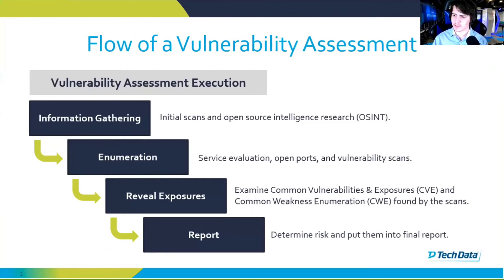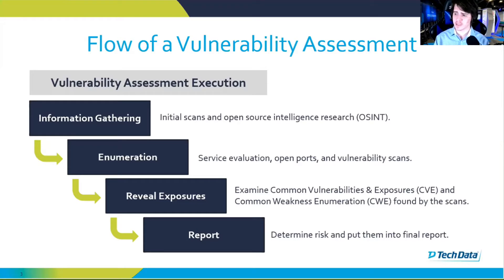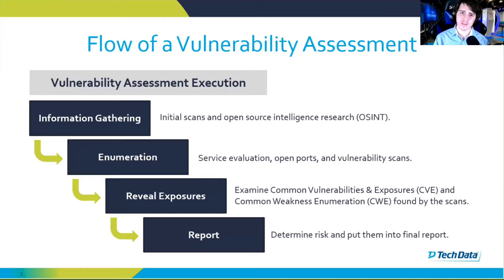Now let's go into the high level flow of a vulnerability assessment, broken down into parts: information gathering, enumeration, revealing exposures, and then reporting. For information gathering, these are your initial scans. Tools like Nessus, Nmap, or OpenVAS can be used to get your initial information. This could also involve OSINT — looking at tools like Shodan or Abuse IPDB to understand information on the IPs provided by the customer.